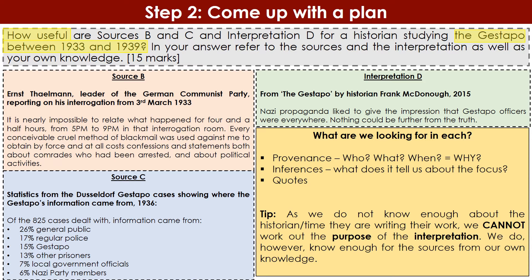Have a look through sources B, C and interpretation D and see if you can work out the provenance — pause the video and try to identify who, what, and when for each. For source B: the who is Ernst Thalmann, leader of the German Communist Party. Start thinking about what you know about the Communist Party. The what is a report he produced — reports are normally done after an event — on his interrogation from the 3rd of March 1933. That's the when, so think about what you know as historians about that date, what the Communist Party are trying to do, what happened just before and just after.